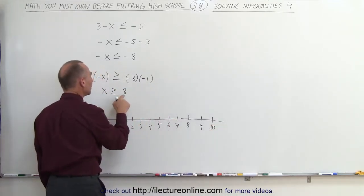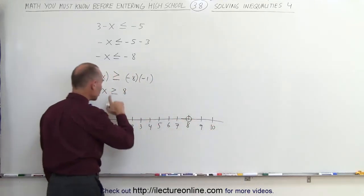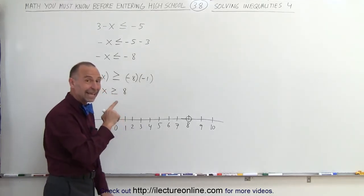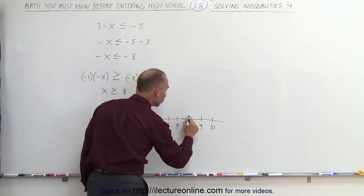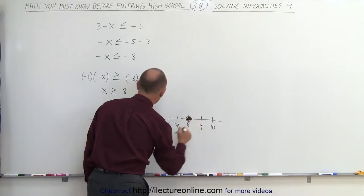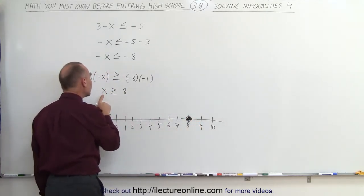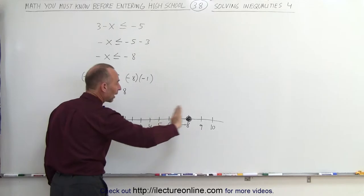The critical point will be the number 8. We draw a little circle around it. Now we darken the circle because it says an equal to, that means it includes that point. And it says that all values greater than or equal to, so anything to the right of the 8.